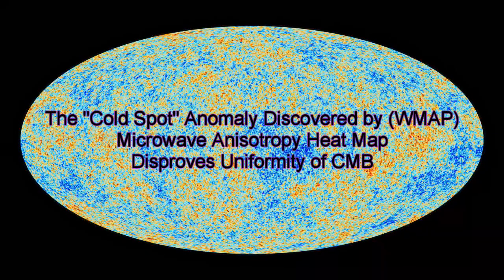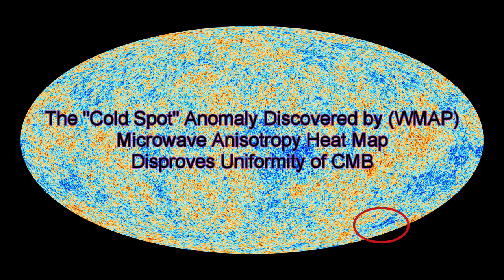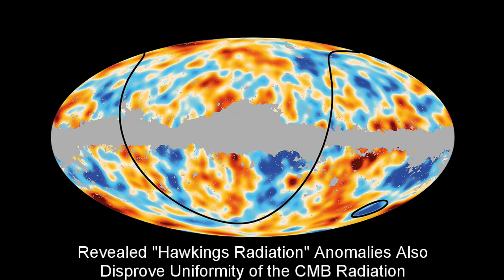The cold spot anomaly discovered by the WMAP heat map disproves the uniformity of CMB. Revealed Hawkins radiation anomalies also disproved uniformity of the CMB radiation.